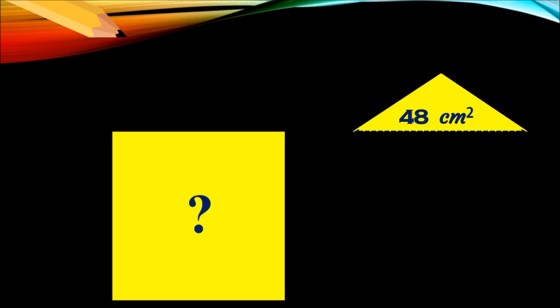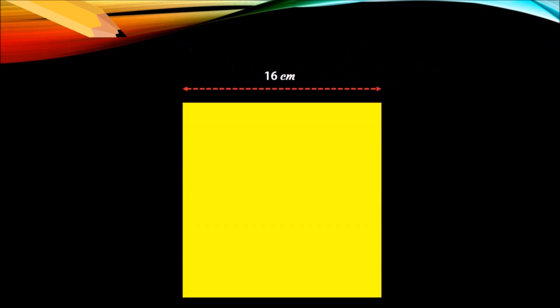Half of 16 is 8, so 8 into 6 gives the answer 48 centimeter square. Out of these two parts, we got the area of the triangle which is 48 centimeter square. Now, the base of the triangle was 16 centimeter, which is also equal to the side of the square. Hence, side of the square is 16 centimeter.